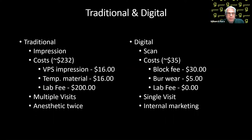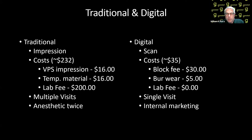So why did we switch to digital over traditional? In traditional, you have to have the impression, and there's always going to be distortion with every step. If you take an impression, there's distortion in the impression. If you pour the impression up, there's distortion in the stone. If you go to the next form, they have to use a die spacer, wax it up, burn it out, cast it — all those things are different distortions. So the more steps you have, the more distortion. Where in a digital world, you scan it, you design it on the scan, you mill it, and you're done — less steps, less distortion.